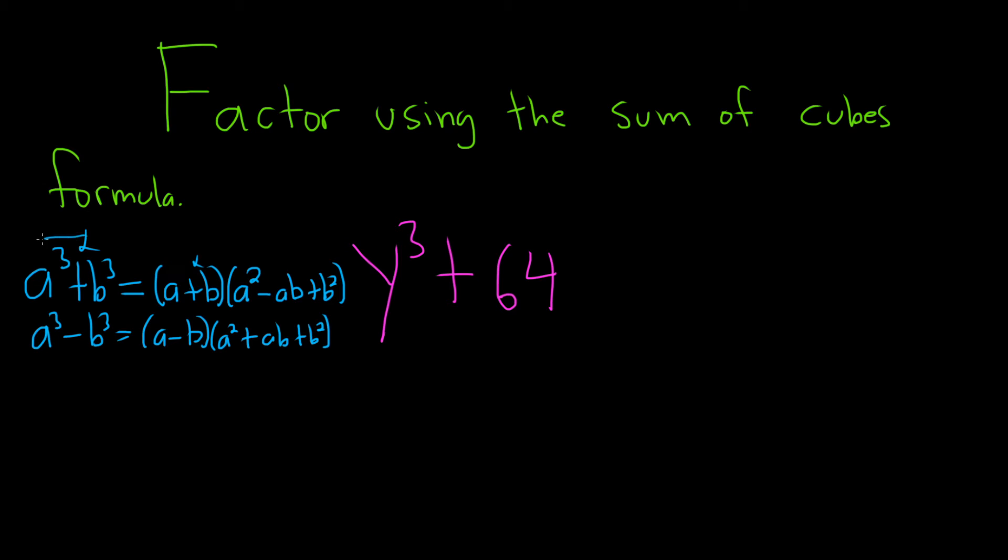Okay, so we're using the first one in this problem because we have a³ + b³. So the very first step would be to write each of our terms as something cubed. y³ is good, it's already being cubed. And then 64, that should be 4³.